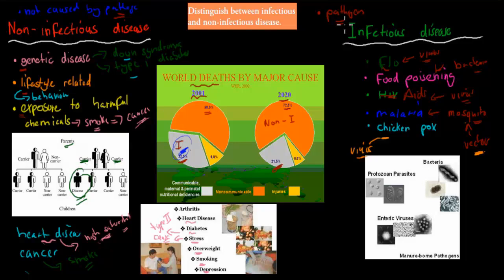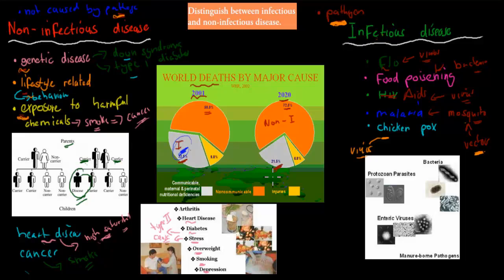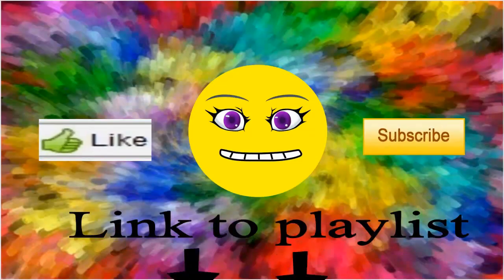The most important point is that infectious diseases are caused by pathogens, and that's the big difference between non-infectious and infectious diseases. Pathogens cause infectious diseases, whereas non-infectious diseases are caused by genetic factors, lifestyle factors, or exposure to chemicals — not by pathogens. I hope that was useful. Thank you for watching.